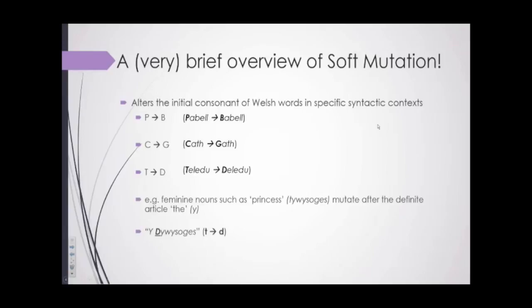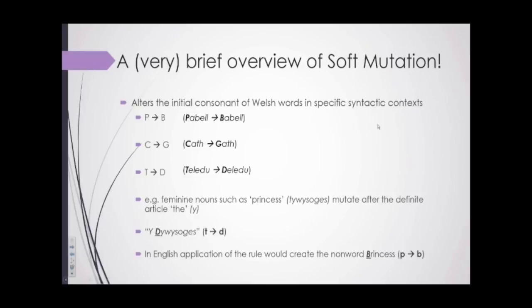So for example, feminine nouns such as 'tywysoges' would mutate after the definite article 'y,' so 'tywysoges' would become 'y dywysoges' — a T to D change. And if we applied these rules to English words or English sentences, then they would create a non-word. So 'princess' would change to something like 'brincess.' That's essentially what we did.